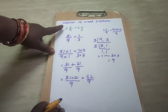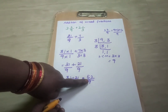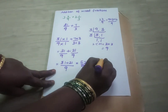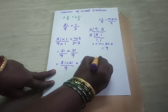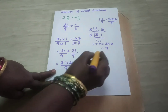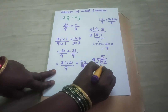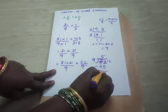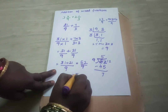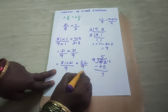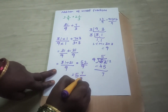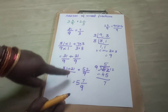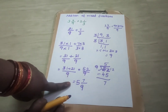Since the question was in mixed fraction form, we have to convert the answer also into a mixed fraction. How to convert? You divide: 52 divided by 9. How many times? 5 nines are 45. If you subtract, you get a remainder of 7. So what is your mixed fraction? Write the quotient first, then the remainder over the divisor: 5 and 7 by 9. So whenever the question is in mixed fraction form, you have to convert the answer also into a mixed fraction.